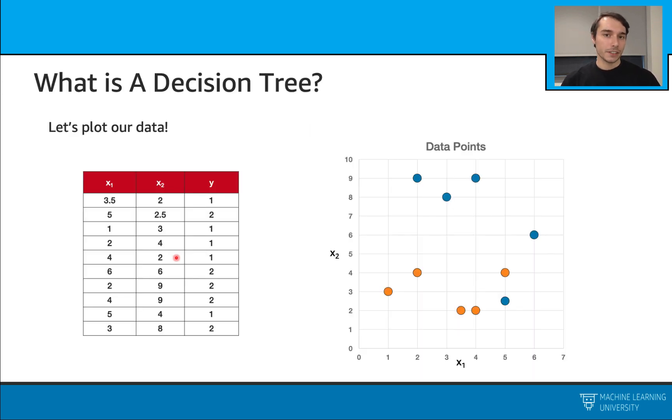Then we learned how to build our decision trees. We used some examples. Here is one of them. In this example, we had these numerical features, and we had this target as a categorical variable, class 1 or class 2. Let's take a look at the plot of the dataset. Orange data points are from class 1, and blue data points are from class 2.